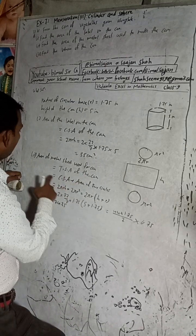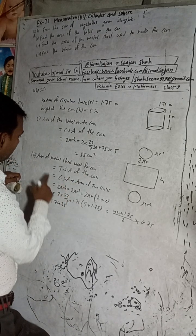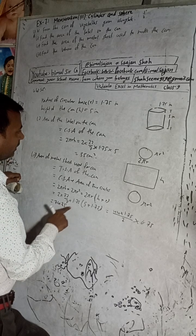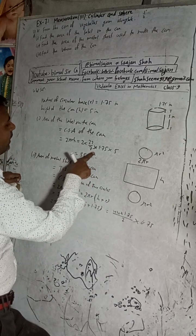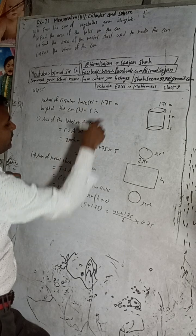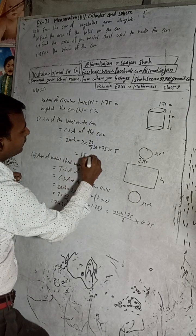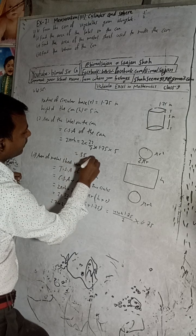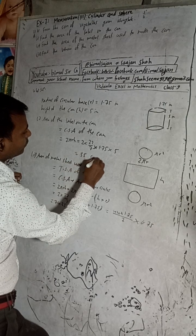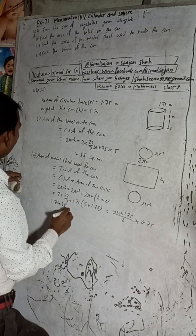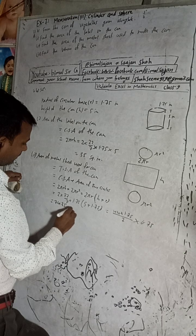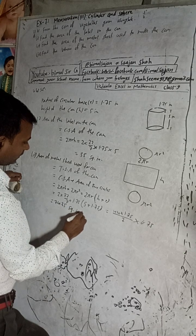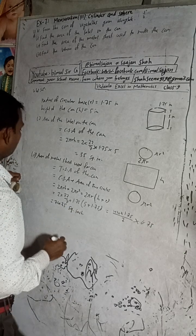This area is not in CM - I made a mistake earlier. The measurements are given in inches, so the area of the metal sheet used to make the can is 74.25 square inches.